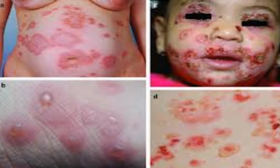Bullous lupus erythematosus is characterized by the presence of neutrophils and nuclear dust at the dermal-epidermal junction with separation of the epidermis from the dermis.